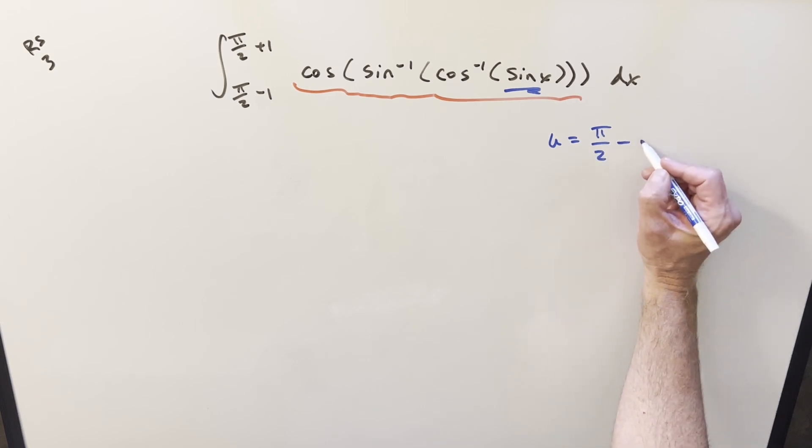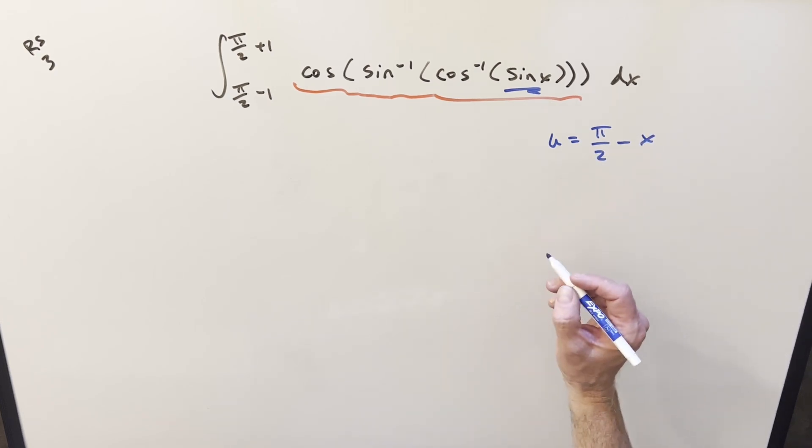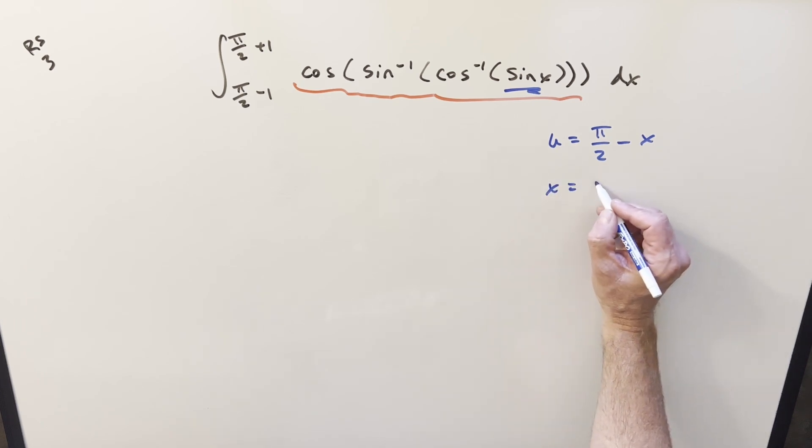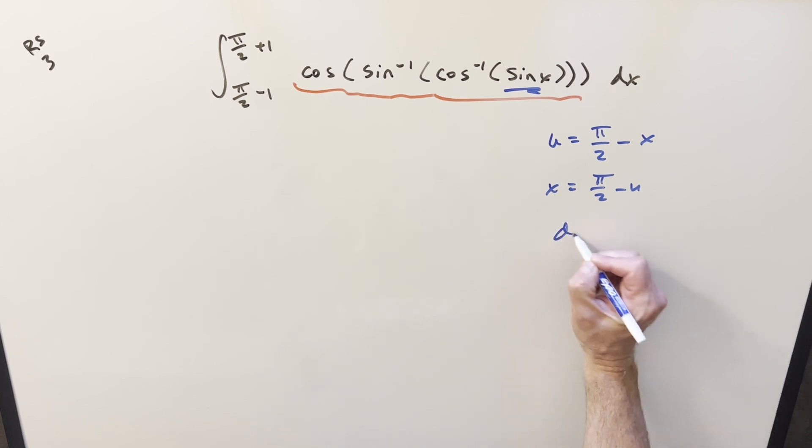If I do u equals π/2 minus x, then we could also rearrange this for x. We have x is going to be π/2 minus u. Then take a derivative, our dx value is going to be just minus du.